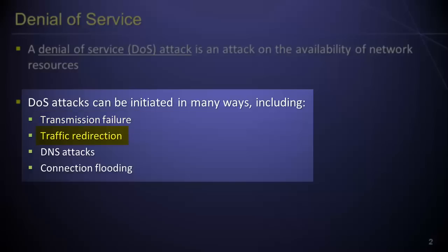The second way in which a denial of service attack can be initiated is through traffic redirection. In this type of attack, a malicious party manipulates a router's routing table such that either no network traffic is directed to the router, or an excessively large volume of traffic is directed to the router, thus disrupting the normal flow of information across the network. Third, a malicious party can initiate a denial of service attack by targeting a domain name server, or DNS.